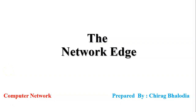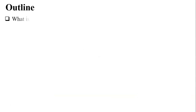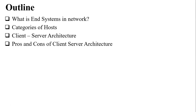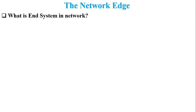Hello friends, myself Chirag. In this video I am going to discuss the network edge topic of computer network. The outline covers: what is an end system in a network, categories of host, client-server architecture including how client and server communicate with each other, and the pros and cons of client-server architecture. Let us start with the first point.